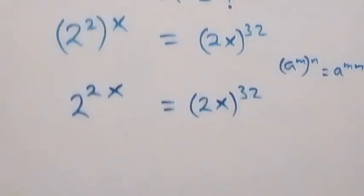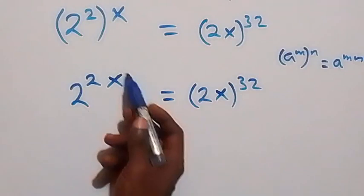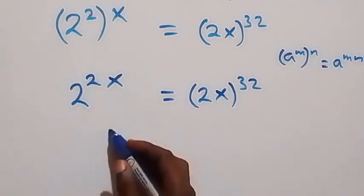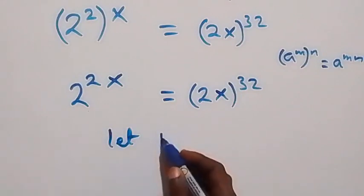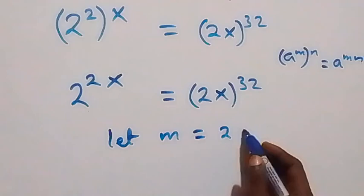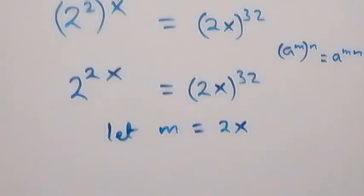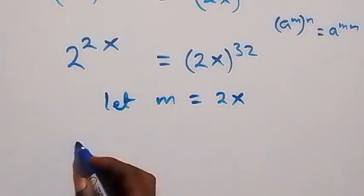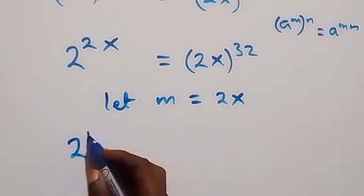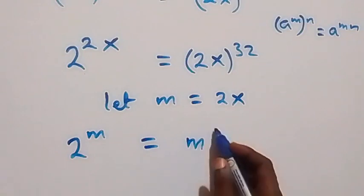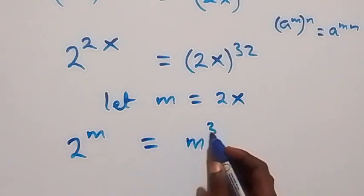From here, we have 2x here and 2x here. Let's use a letter to represent that. Let m be equal to 2x. Then from what we have, we can rewrite this as 2 raised to power m equals to m raised to power 32.